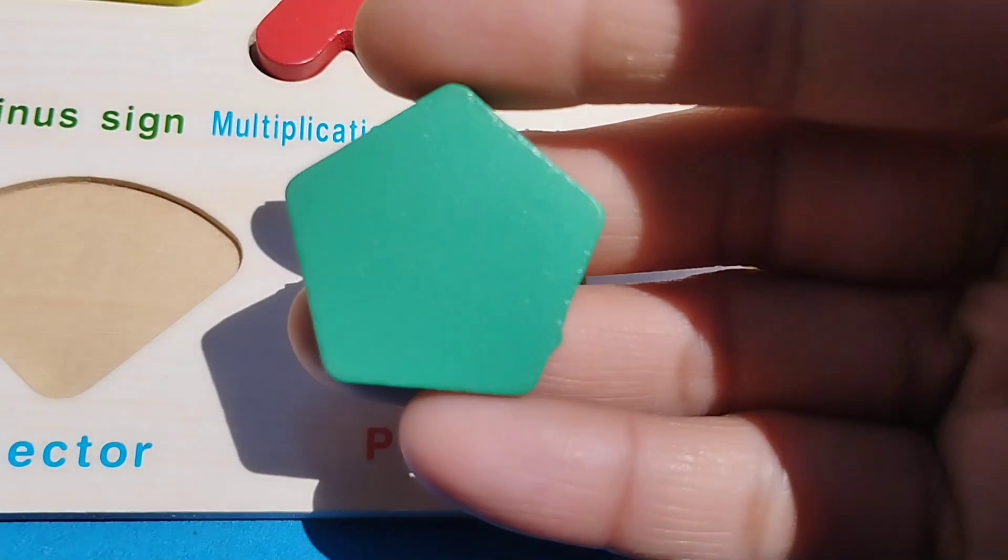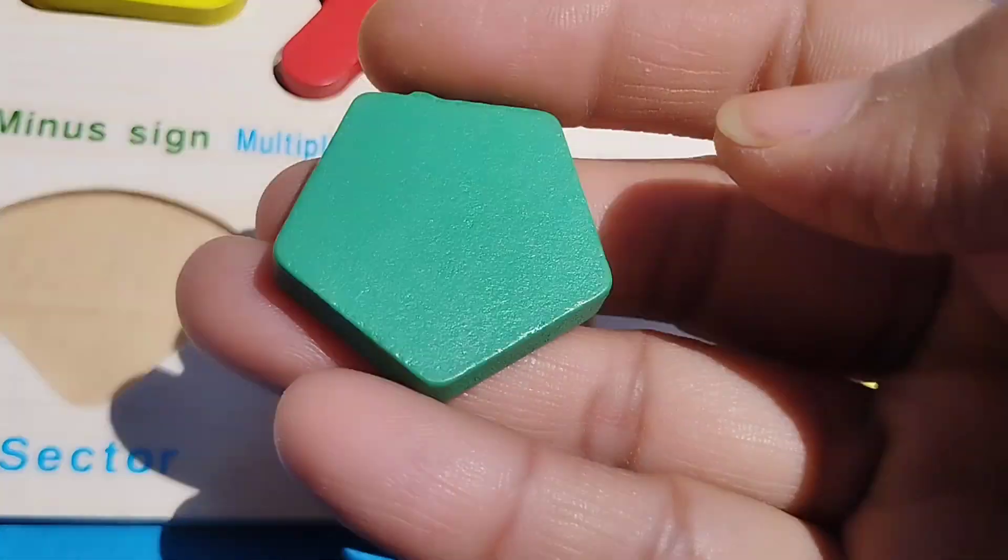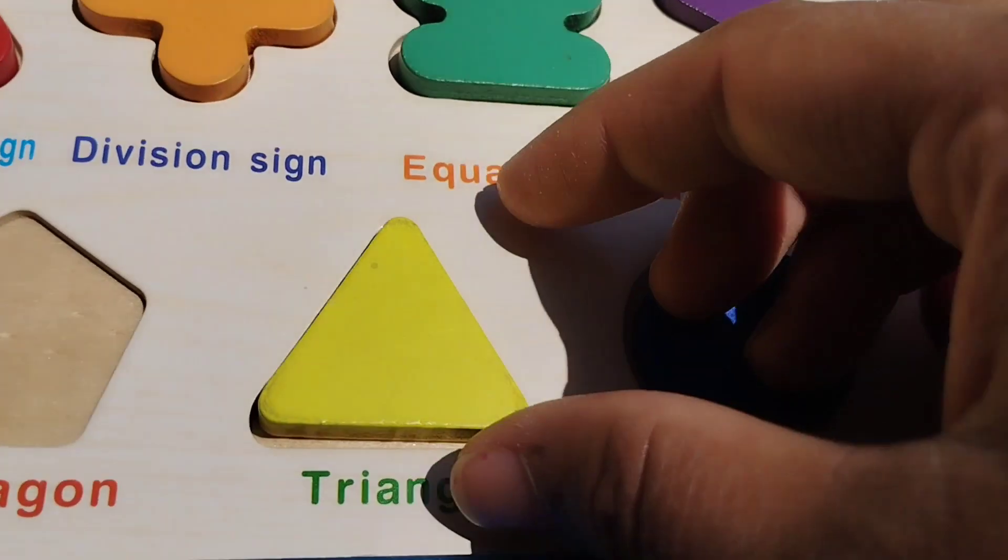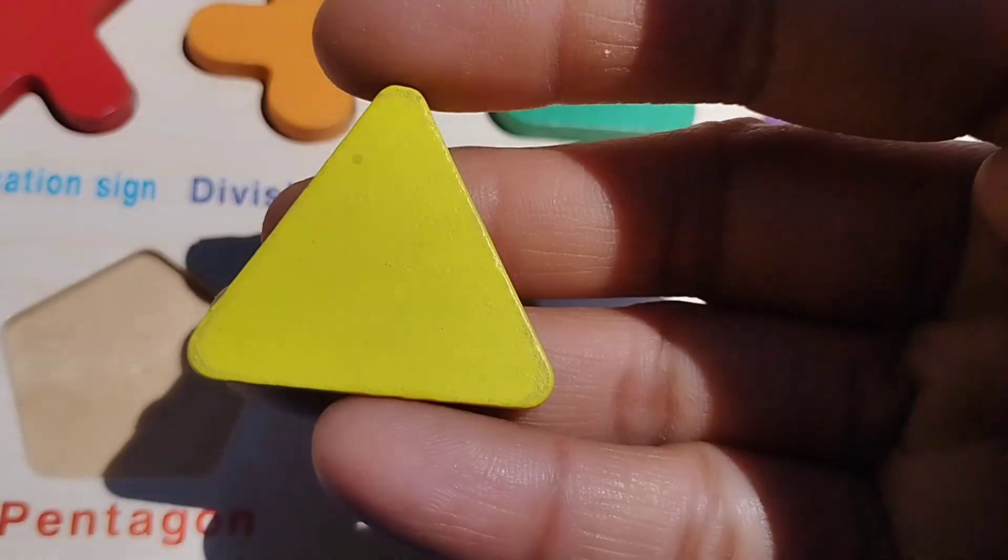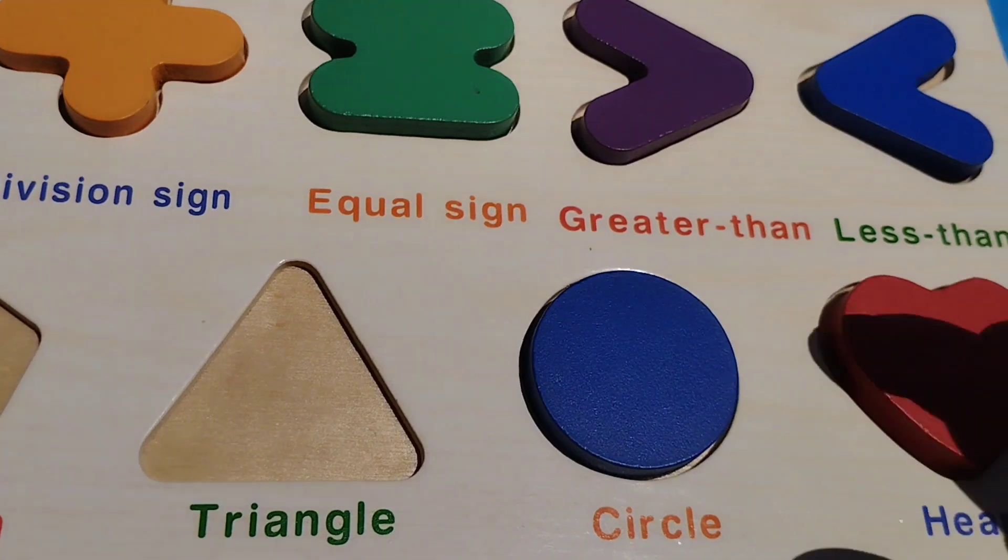Pentagon. This is pentagon shape. Pentagon. The next shape is triangle. This is triangle shape. Triangle.